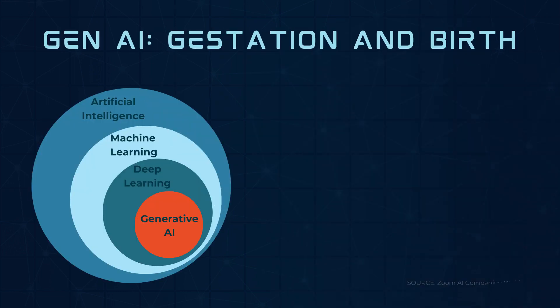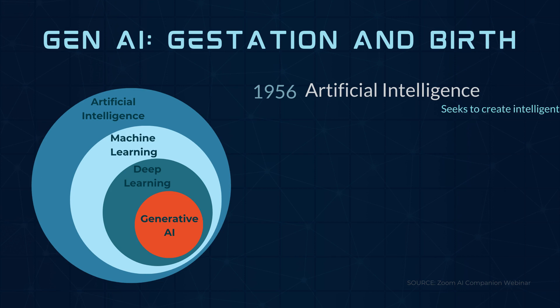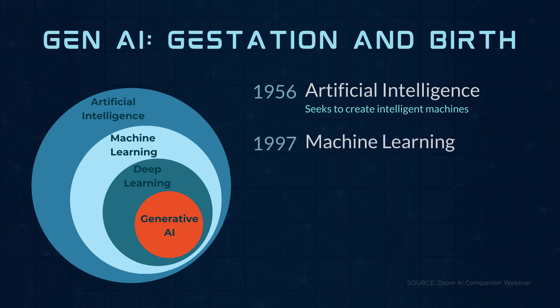Gen AI is fairly new. It all started in 1956 with artificial intelligence, the field of computer science that seeks to create intelligent machines that can replicate or exceed human intelligence. Then, in 1997, machine learning, or ML, came into the picture. ML is a subset of AI that enables machines to learn from existing data and improve upon that data to make decisions or predictions.